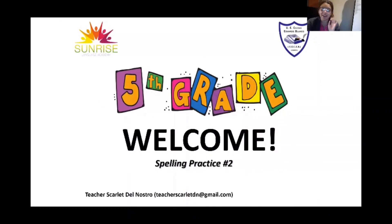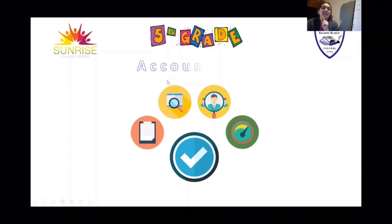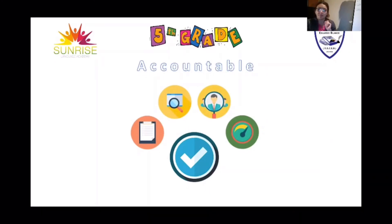So let's start. Our first word — let's check it. Let's spell it: A-C-C-O-U-N-T-A-B-L-E. Accountable. Accountable. Let's spell it once more: A-C-C-O-U-N-T-A-B-L-E.